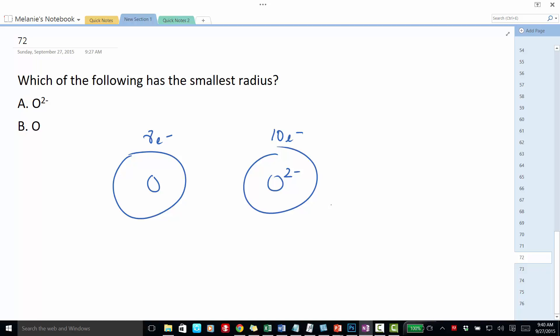So the oxide ion has a larger radius, so the smallest radius is going to be the neutral oxygen atom.